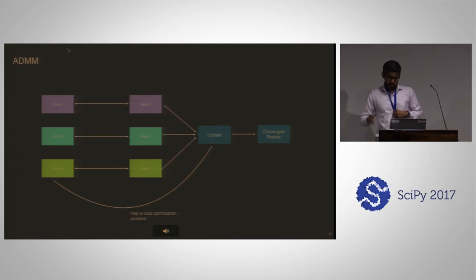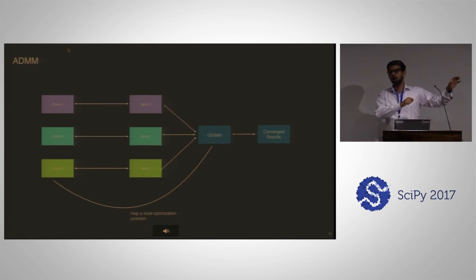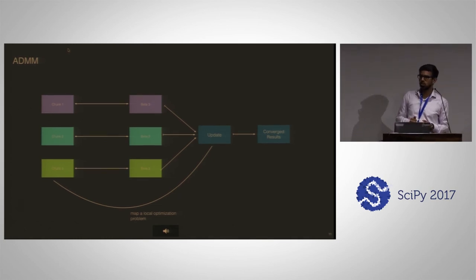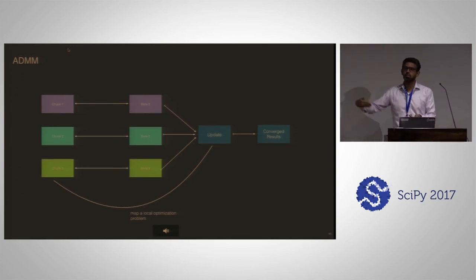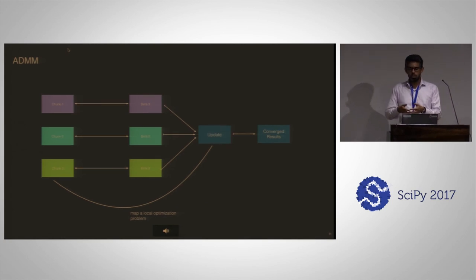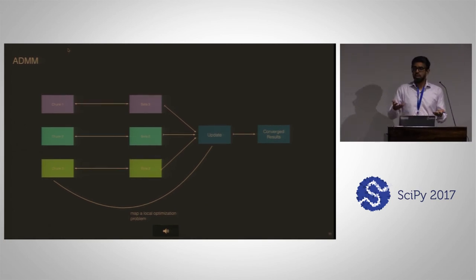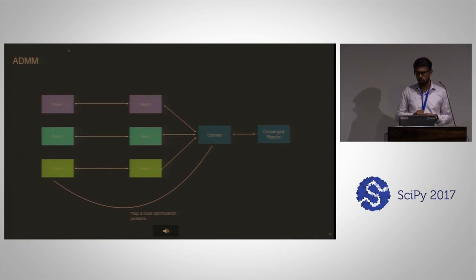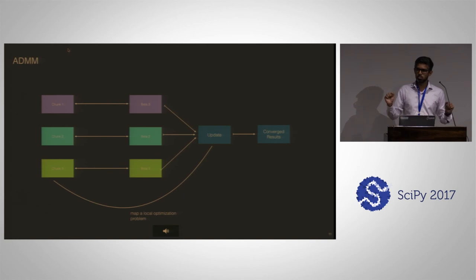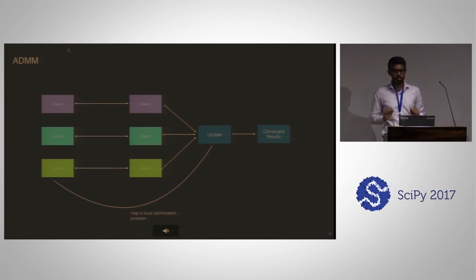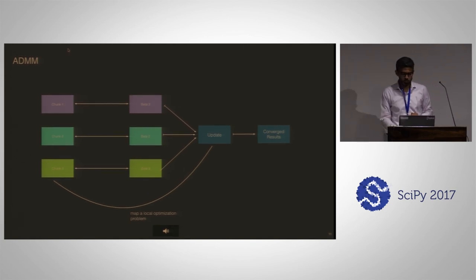More pictorially: if you have a chunk of data somewhere, you map this local update function — which is just an L2 regularized problem and is also analytically solvable — and then you get some betas out of it. You do an update to reach a convergence constraint, and you keep asking your workers to do things in parallel without ever exchanging this data. So the data generally doesn't move, or doesn't have to move.